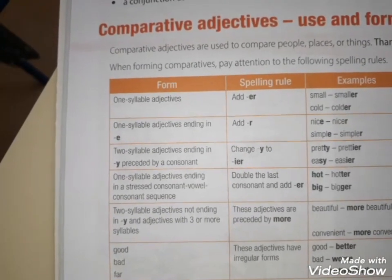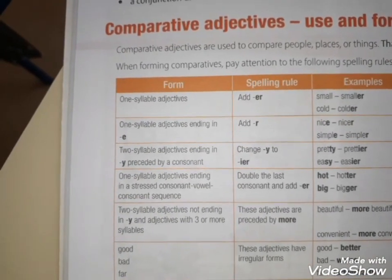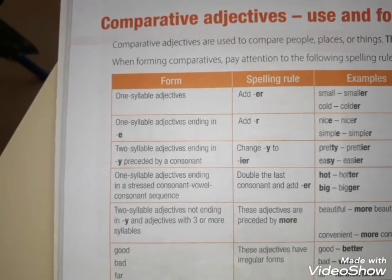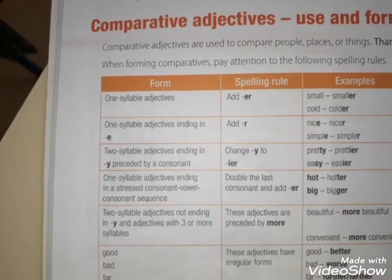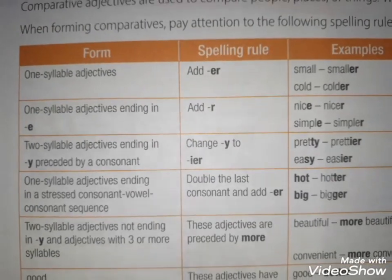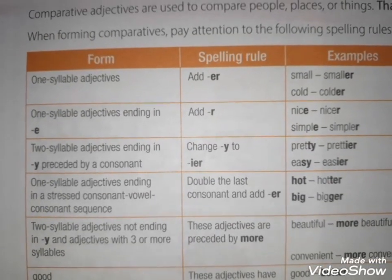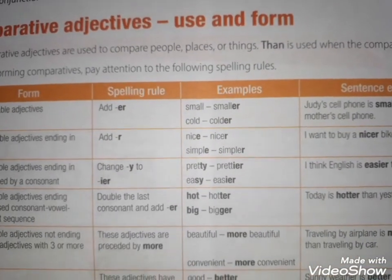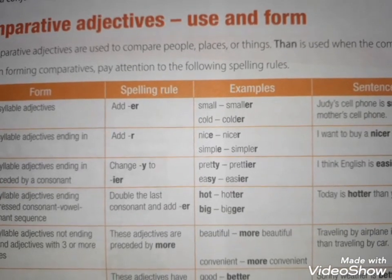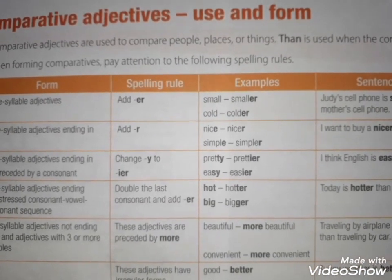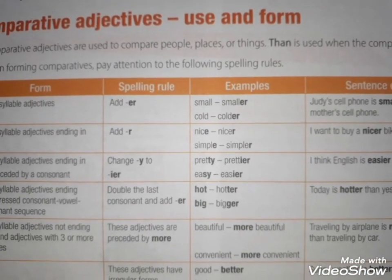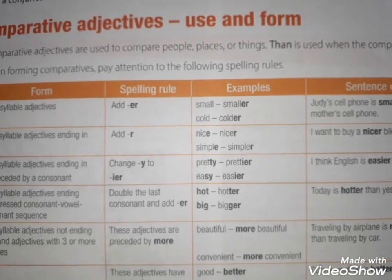Adjetivos que terminam em Y e antes desse Y tem uma consoante: tira o Y e acrescenta IER. Pretty, bonita → prettier, mais bonita que. Easy, fácil → easier, mais fácil que.